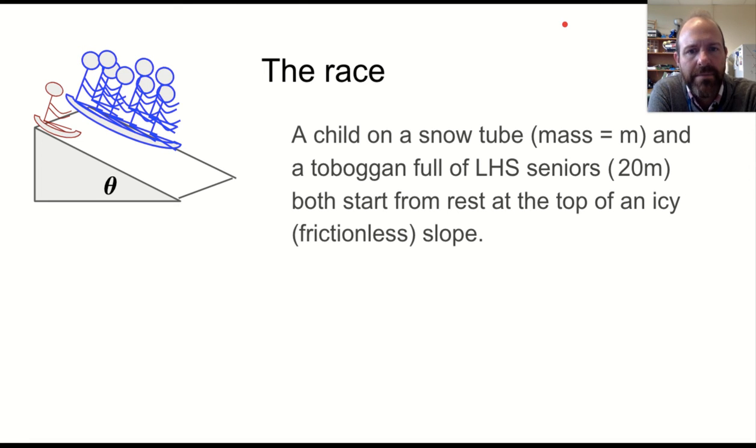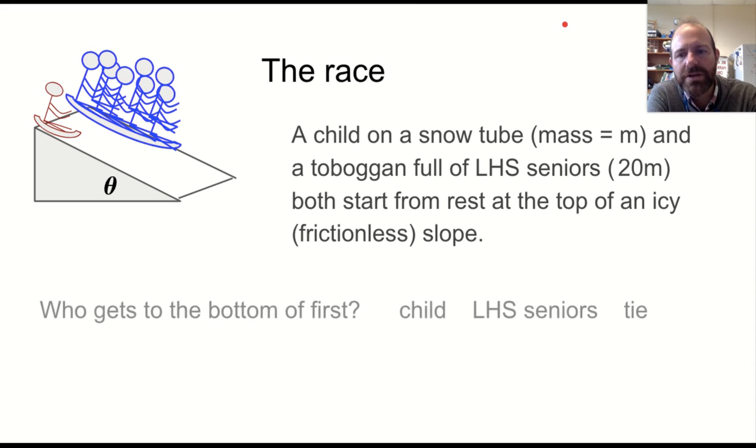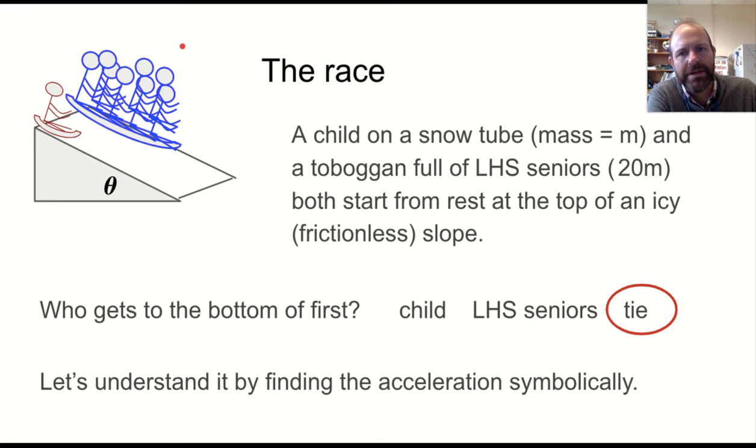The last piece is to consider something that is related to our two different carts going down the ramp we did in class. But if a child on a snow tube, mass of M, and a toboggan full of LHS seniors, 20M for their mass, both start from rest on the top of an icy, frictionless slope. Now, of course, ice is not perfectly frictionless, but if it were, we could solve this problem. And the question is, who would get to the bottom first? The child, the group of seniors, or would it be a tie? Now, if this is anything like the situation we saw in class with the two carts, we would expect that you would have a tie. That all of these seniors, assuming that we're measuring the back of the thing where they both start together, shouldn't be effective.